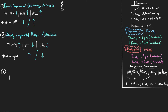Example number three — this is the tricky one. pH is 7.37, CO2 is 50, and bicarb is 28. Using our systematic approach: what's going on with our pH? The pH is normal. So do we just classify this as normal and move on? Well, no — we can't just see a normal pH and think it's normal. We have to look at the rest of the blood gas.